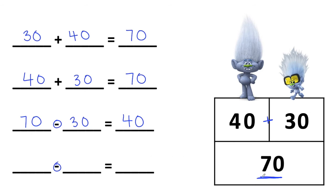And then the last number sentence in this fact family is another related subtraction fact. I'm still going to start with the whole, which is 70. But this time, I'm going to take away the other part. So I'm going to take away 40, and that should give me 30.